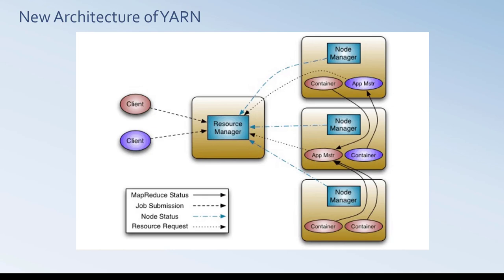An application running tasks on a YARN cluster follows these steps: first, the application starts and talks to the resource manager, which makes a single container request on behalf of the application. The application master starts running within that container. Then the application master requests subsequent containers from the resource manager to run tasks for the application. Tasks do most of the status communication with the application master. Once all tasks are finished, the application master exits, the last container is deallocated, and finally the application client exits.